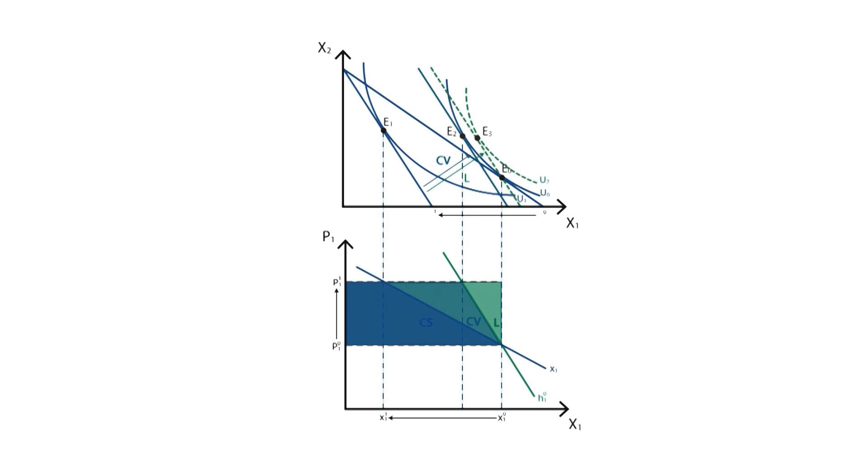As we've seen, the Laspeyres index overestimates the loss of consumer welfare, but turns out to be useful in some cases. The Paasche index does the opposite. It underestimates the loss of consumer welfare. However, both indices can be used as long as we're familiar with their respective flaws.